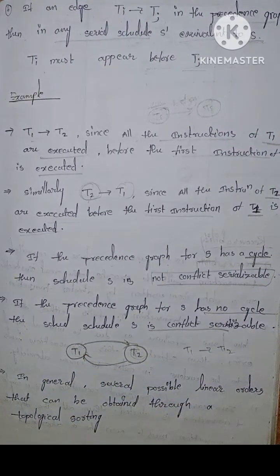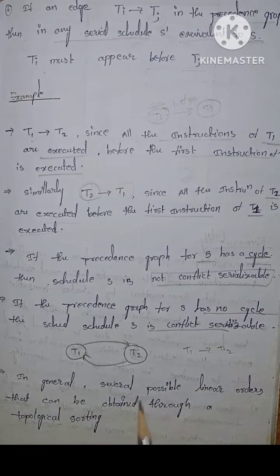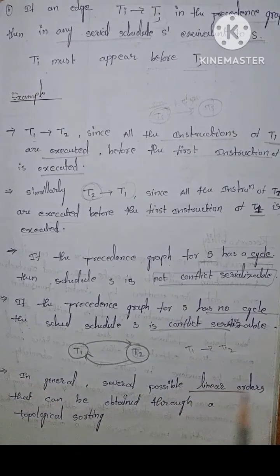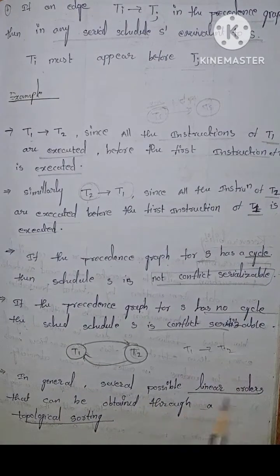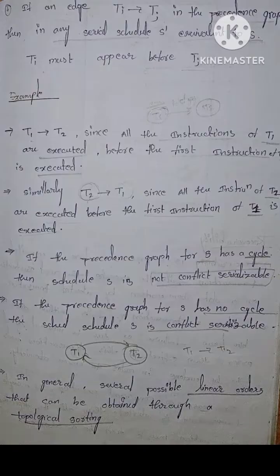In general, several possible linear orders can be obtained through topological sorting.